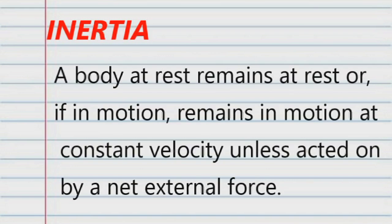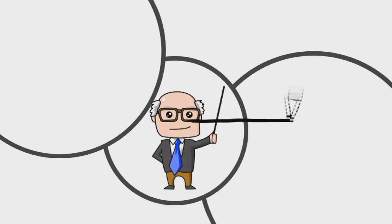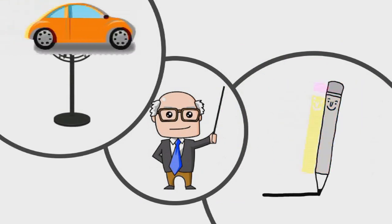A body at rest remains at rest or if in motion, remains in motion at constant velocity unless acted on by a net external force. All objects have the tendency to resist changes in their state of motion or keep doing what the objects are doing.